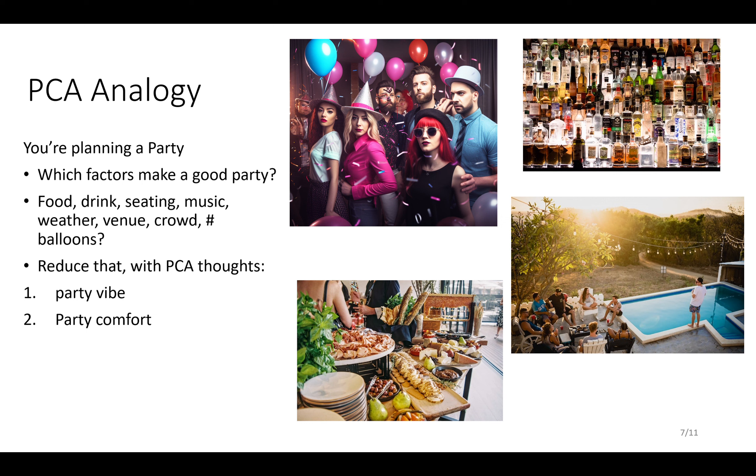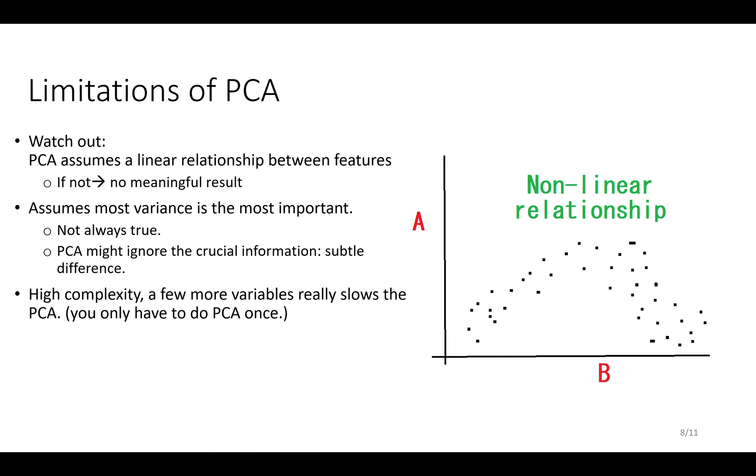But there are limitations to PCA. It does assume a few things. It assumes there's a linear relationship. Previously I showed you correlated and uncorrelated variables, but if they're not linearly related, then it will probably give you a non-meaningful result. So here, if we look at A and B, there is a relationship, it's just nonlinear, but PCA can't see that.